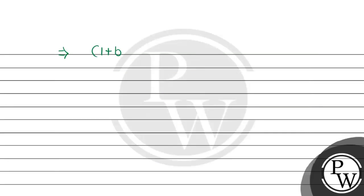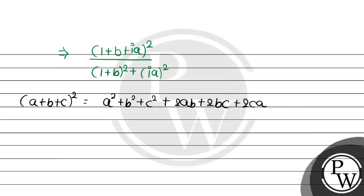The numerator is 1 plus b plus ia entire bracket square. In the denominator, 1 plus b square plus in bracket ia square. Now there is one equation for square of three terms. If we have a plus b plus c entire square, then a square plus b square plus c square plus 2ab plus 2bc plus 2ca. So the same expression can I apply here. So this will be 1 square plus b square plus ia square plus 2 into 1 into b plus 2 into b into ia plus 2 into ia into 1.